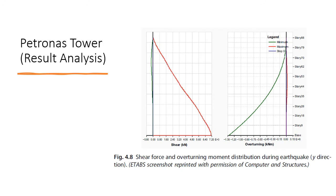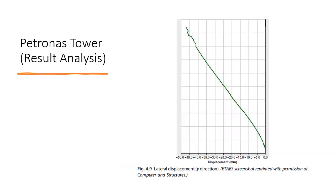Figure 4.8 shows the shear force and overturning moment distribution during an earthquake. In the analysis, we observed that the lower portion of the building experiences maximum shear and overturning moment, in which the building responds as a vertical cantilever, as intended by the designer. Figure 4.9 shows the lateral displacement; at the top floor, the probable displacement is approximately 50 mm as shown in the graph.